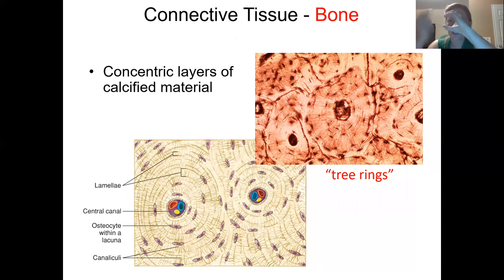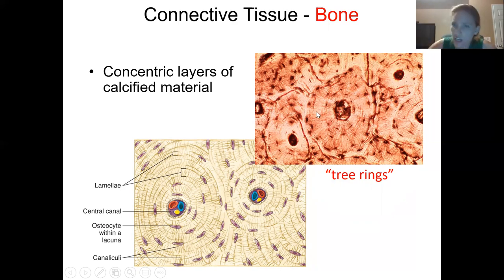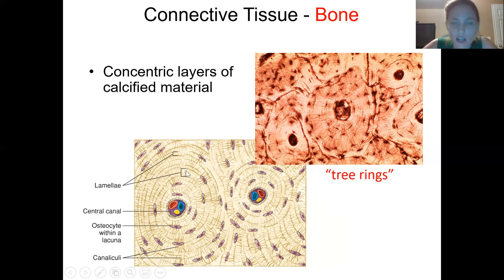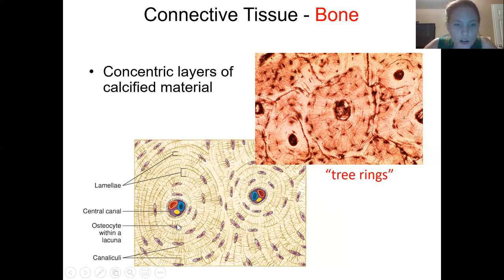Think of it like tree rings — one full distance across is one osteon. In the middle of each osteon you have a little canal running all the way through it called the central canal. If you cut the cylinder in half you'll see circles, and in the middle a darker circle — that's the central canal. Because bones are living, that's where you'll find nerves and blood vessels. Surrounding the central canal you have concentric layers going all the way around; each layer is called a lamella, or lamellae if plural.